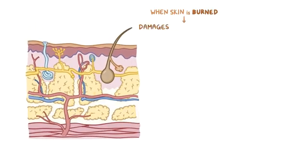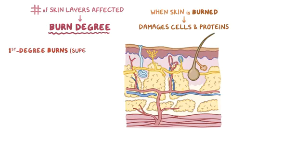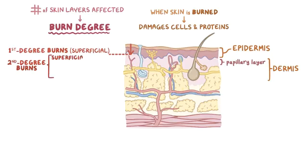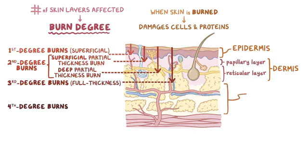When the skin is burned, it damages cells and the proteins within them, and the number of skin layers affected determines the burn degree. In first degree burns, also called superficial burns, the burn only affects the epidermis. In second degree burns, the burn affects the epidermis and the dermis. If only the papillary layer is burned, it's a second degree superficial partial thickness burn. If the burn reaches the deeper reticular layer but doesn't extend through the entire layer, it's a second degree deep partial thickness burn. In third degree burns, also called full thickness burns, the entire epidermis and dermis are affected. Finally, fourth degree burns extend into the hypodermis.